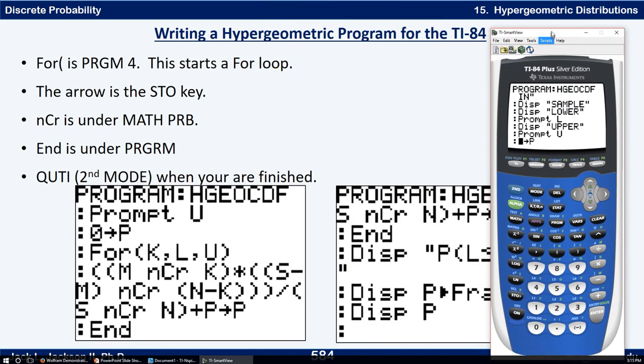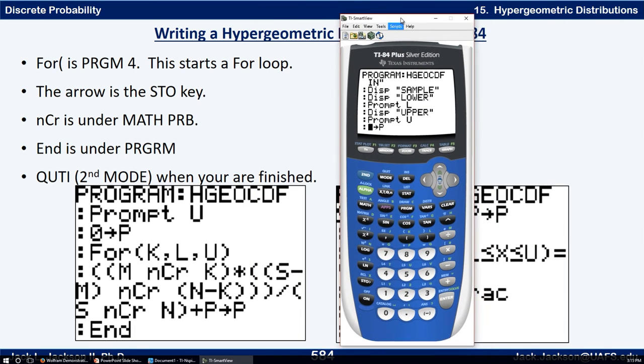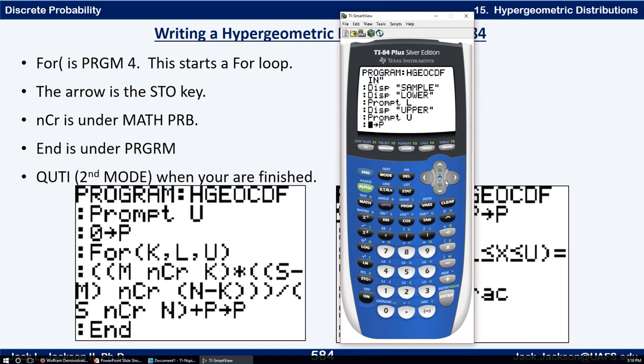Okay, so now we're to the point in the program where we have got everything in, all the inputs in. After we do that prompt U, we have lower and upper limits. We got all the inputs in. So now what we do is we're going to store zero in P just to make sure that starts out with zero in it. So zero store P. Remember the store key is this STO key right down here right above the on key. It's one above that STO. That gets you the arrow. So zero store alpha P.